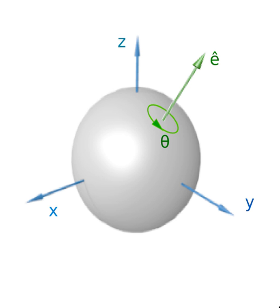There are no non-trivial rotations in one dimension. In two dimensions, only a single angle is needed to specify a rotation about the origin. The angle of rotation specifies an element of the circle group, also known as U(1). The rotation acts to rotate an object counter-clockwise through an angle θ about the origin. Composition of rotations sums their angles modulo 1 turn, which implies that all two-dimensional rotations about the same point commute.